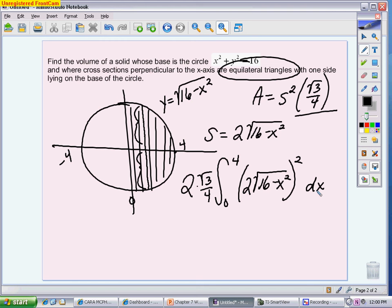If you're allowed to use your calculator, which you will be on your test and quiz, then you definitely just at this point want to plug it in your calculator and get your numeric answer and don't forget about the coefficients in front. At that point, you have your answer for your cross-sectional volume.